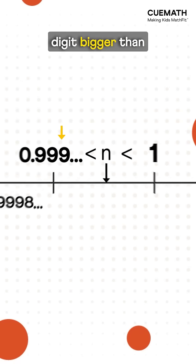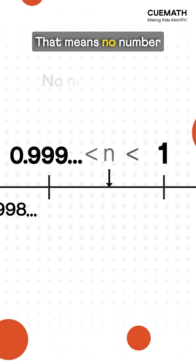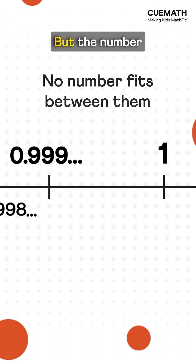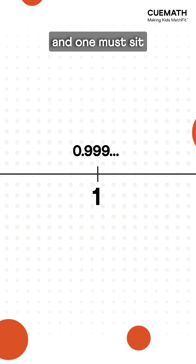And there is no digit bigger than 9 that will push it closer to 1. That means no number fits between them. But the number line has no gaps. So 0.9 repeating and 1 must sit on the exact same spot or they must be equal.